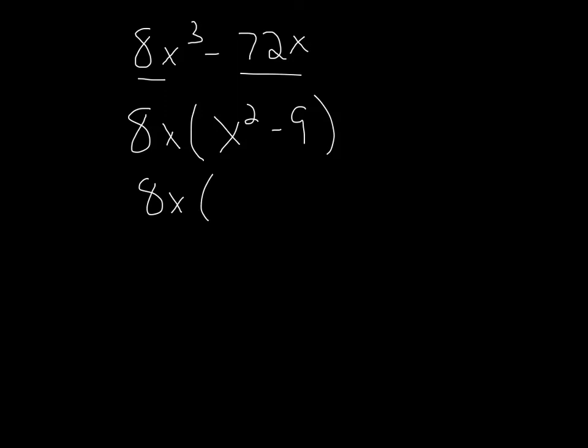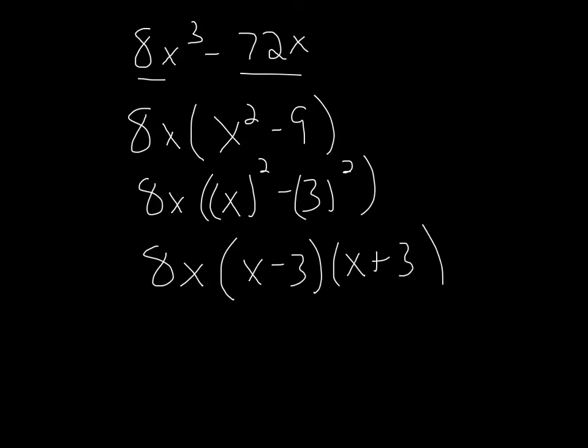All right. Let's break them into their houses. Squared minus 3 squared. And now we just see that it goes like this. 8x times x minus 3 times x plus 3. And we are good to go. And there is the difference of two perfect squares.